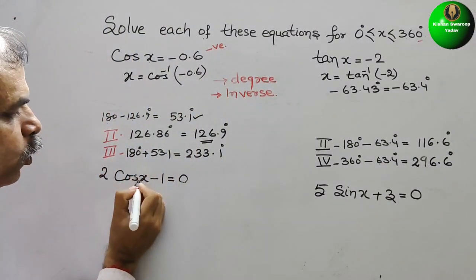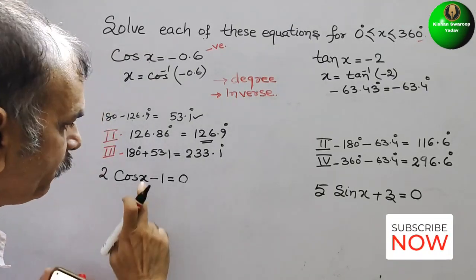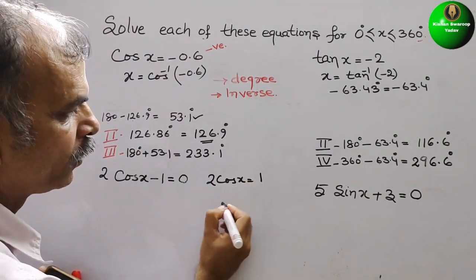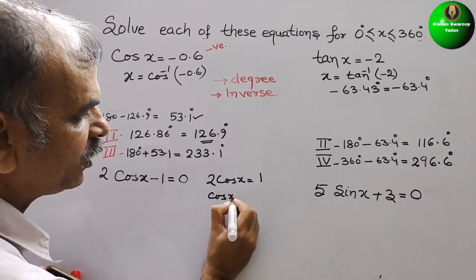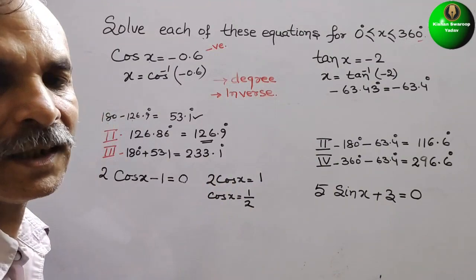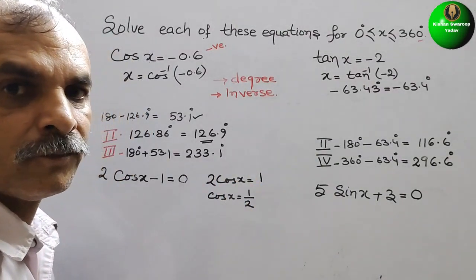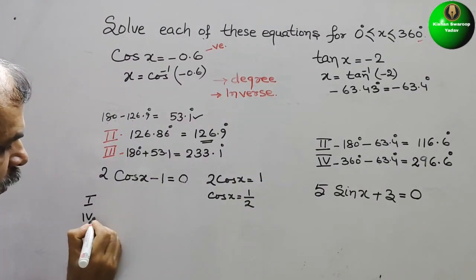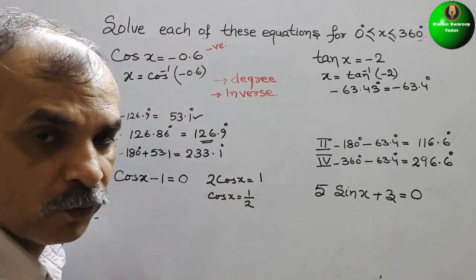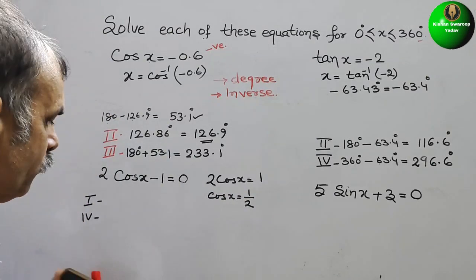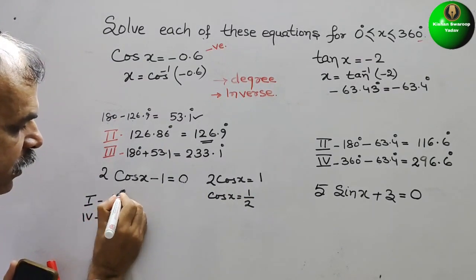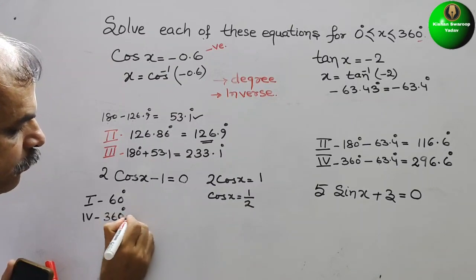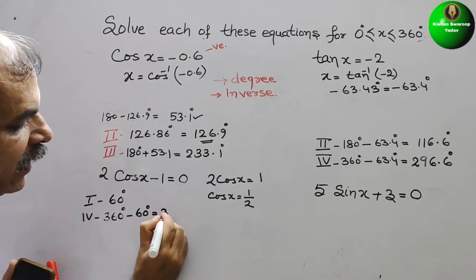They have given 2cos x - 1 = 0. We bring -1 to the right side: 2cos x = 1, so cos x = 1/2. This is positive, so cos is positive in the first and fourth quadrant. Since 1/2 = cos 60°, we get x = 60°. For the fourth quadrant: 360° - 60° = 300°.